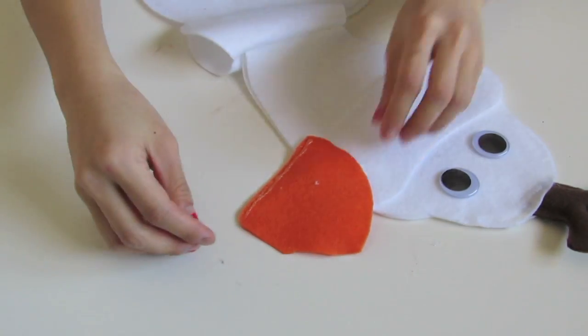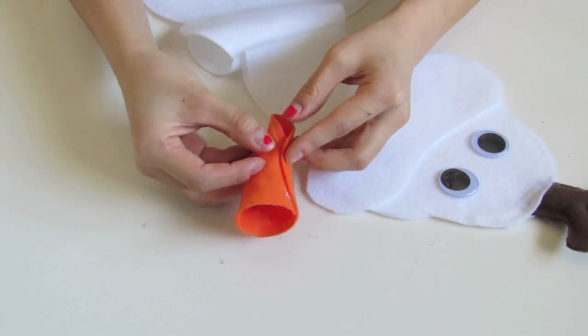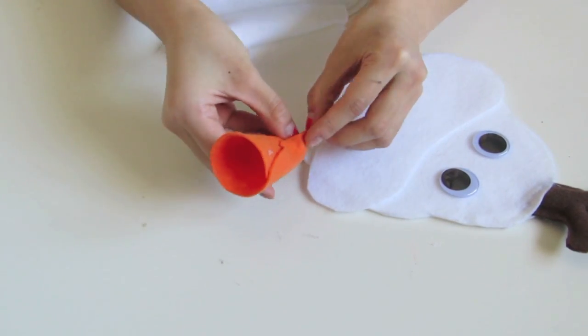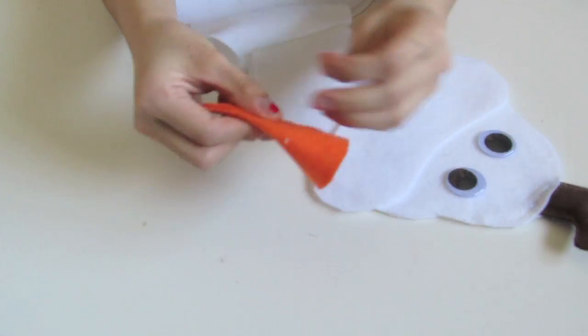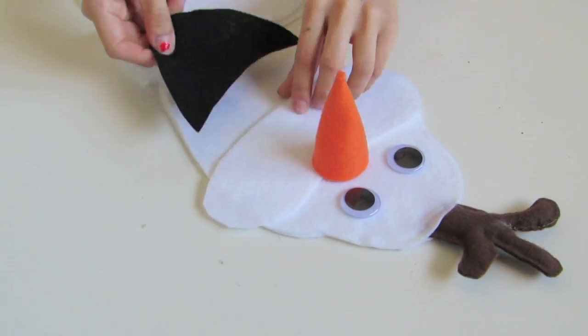Alright, so for the nose piece, we're just going to add glue on one of the sides and then kind of fold it into a cone-like little piece for the nose. And then we're just going to start laying everything onto the face.